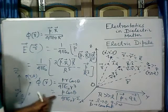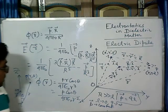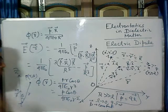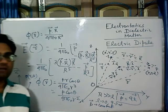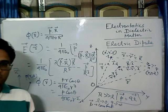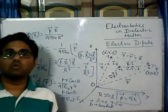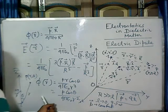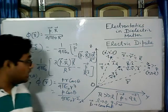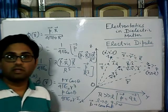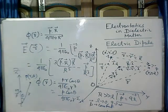Now let's find out the electric field for this orientation of the dipole. One important point: when you are dealing with a point charge, the potential varies with 1 by R — 1 by the distance. But here you can see the potential of the electric dipole varies with 1 by R squared. And we will see what will be the variation of electric field at point P.